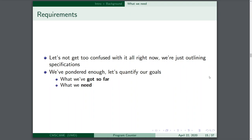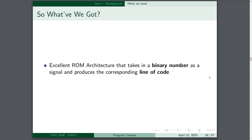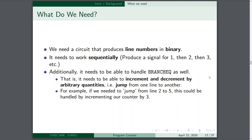Let's think of our goals in simple terms — what we've got so far and what we're going to need. We currently have an excellent ROM architecture that takes in a binary number as a signal and produces the corresponding line of code. Now, our job is: we need a circuit that produces line numbers in binary. That's it. And it needs to work sequentially — produce one, then two, then three, over and over.